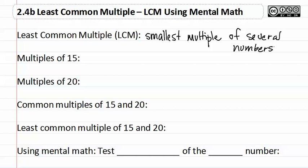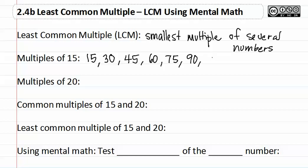If we looked at some of the multiples of fifteen, we would know fifteen times one is fifteen, times two is thirty, times three is forty-five, times four is sixty, times five is seventy-five, times six is ninety, times seven is one hundred five, and times eight is one hundred twenty.